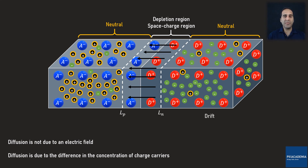This process is called drifting. Every time a minority carrier passes through the depletion region and drifts to the other side, the neutral regions become ionized — the N semiconductor becomes negative and the P semiconductor becomes positive. This slightly reduces the strength of the electric field in the depletion region. To maintain the neutrality of the neutral regions, for every electron that drifts from the P semiconductor to the N, an electron diffuses back to the P semiconductor.